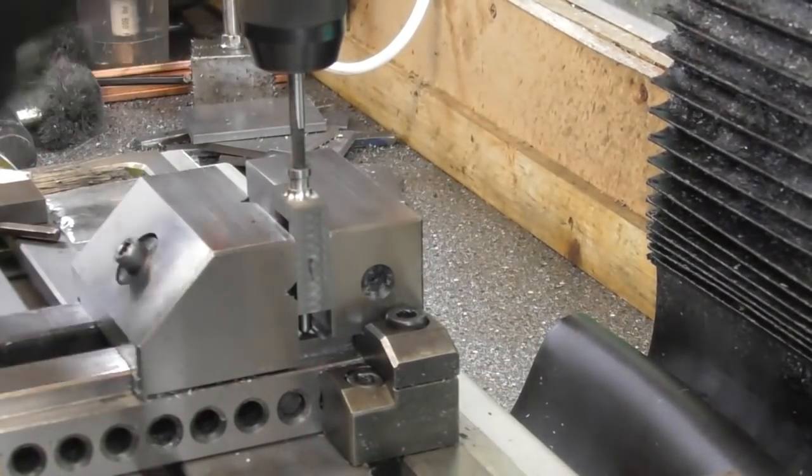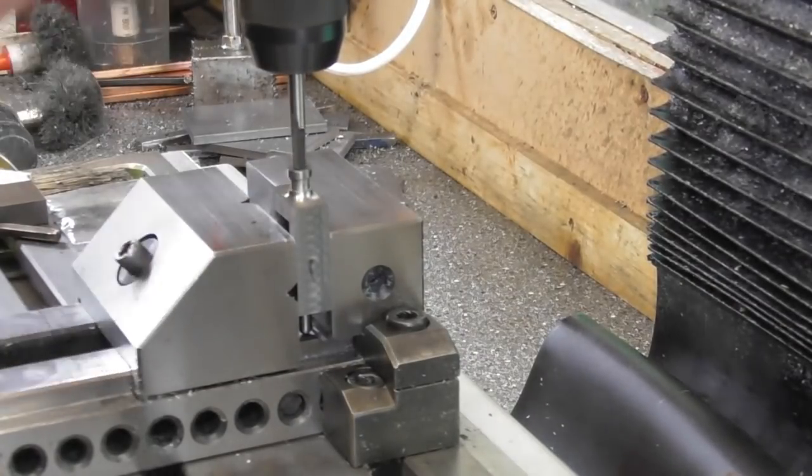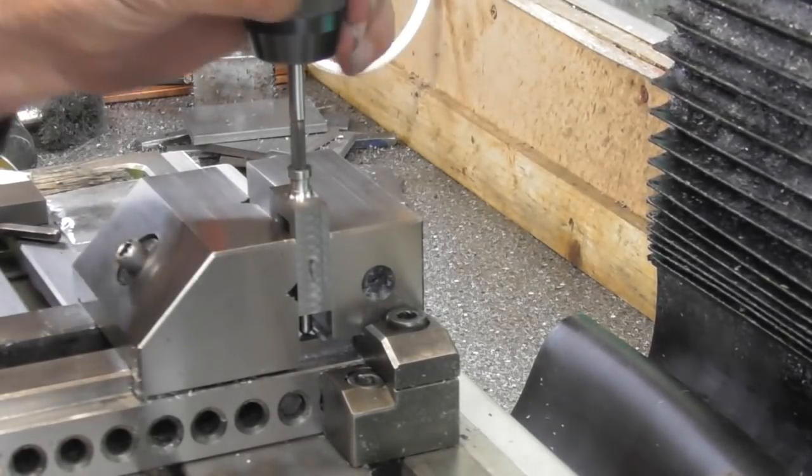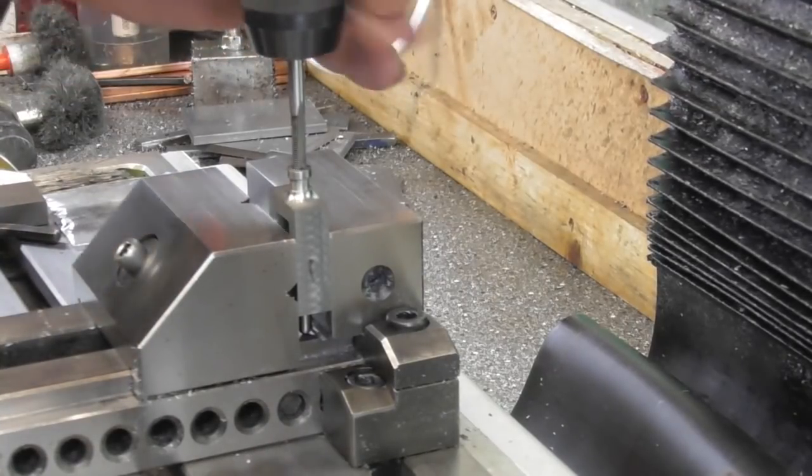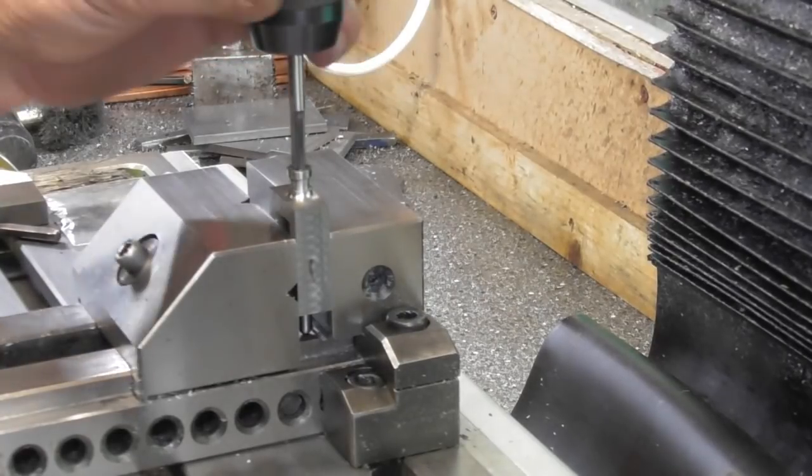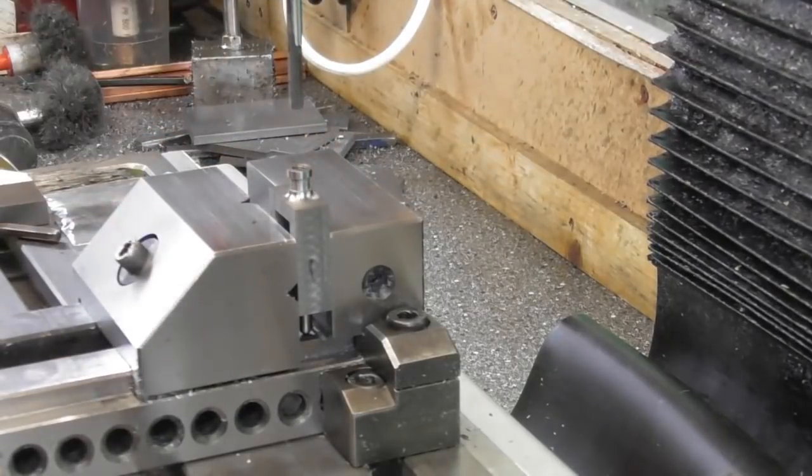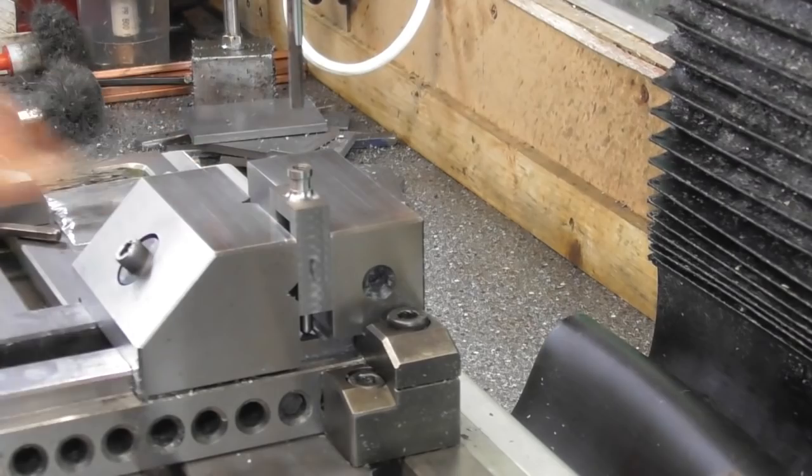So improvised plug tap going in and that's it, bottomed out. Make sure it doesn't tear out the last thread by keeping the pressure. There we go. Okay, so that's the tapping done. Now we need the holes in the side.